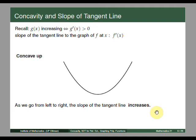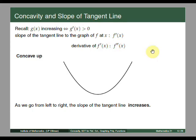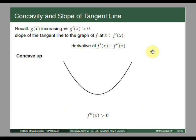What is the relation of that to our function f? The slope of the tangent line to the graph increases, and the derivative of f prime is f double prime. Because of the notion that if something is increasing, its derivative should be positive, we can conclude that if the function is concave up, f double prime of x is greater than 0. This is a very remarkable observation as it gives us the relation of the concavity of a function and its second derivative.